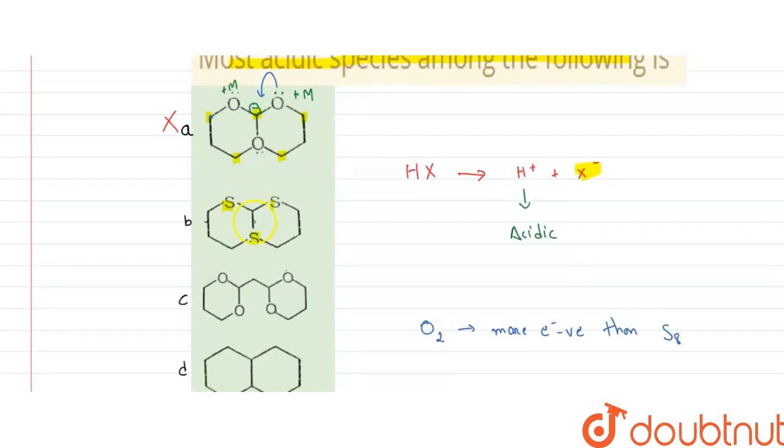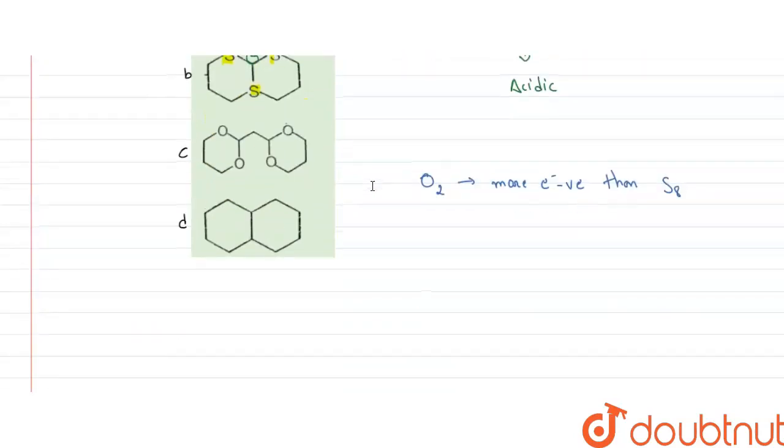Therefore the negative charge appearing will be more stable. Sulfur also has lone pair, it can donate through plus M as well, but its plus M is less powerful when compared to oxygen. So therefore, B is better when compared to A. Let us write the order itself, and then it will be better for us to find the best one.